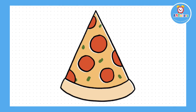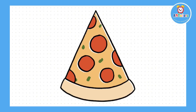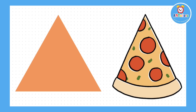Here we have a slice of pizza. What shape do you think this is and how many edges does it have? The slice of pizza is a triangle shape and it has three edges.